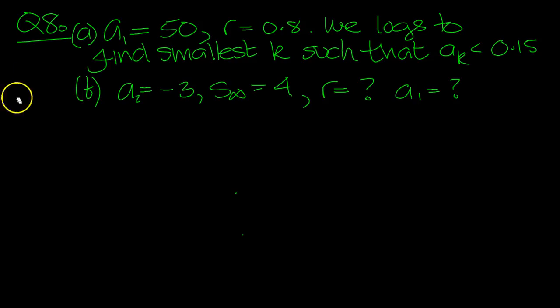Question 8. The first term is 50, the common ratio is 0.8. So subsequent terms are smaller than the preceding terms.